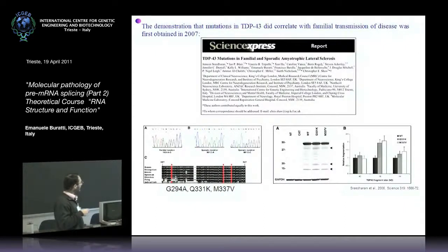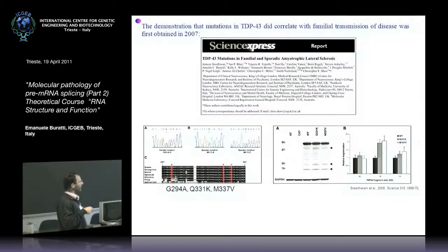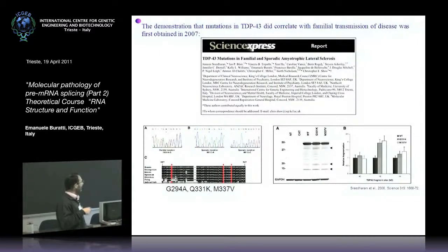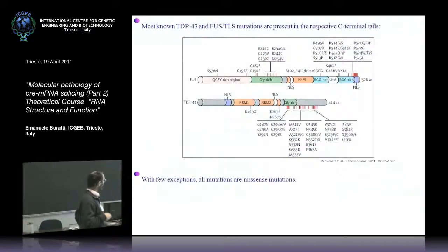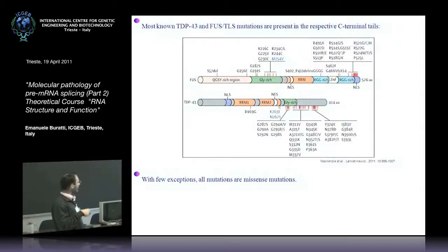When TDP-43 came out, people were skeptical and thought it might be an epiphenomenon — not directly connected with disease. This was resolved just one year later when we, together with Chris Shaw in London, showed there were mutations in this protein that could be inherited with the disease and were directly associated with disease onset. We now know many mutations — mostly missense mutations localized in the C-terminus of TDP-43 — that are associated with disease.